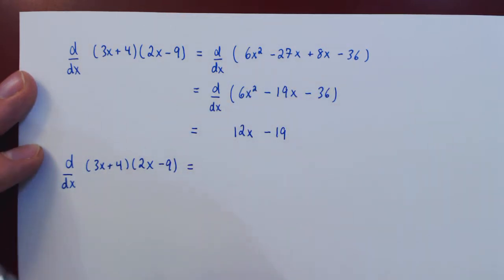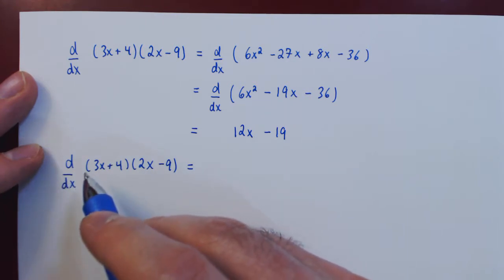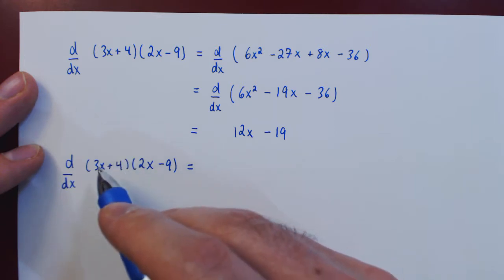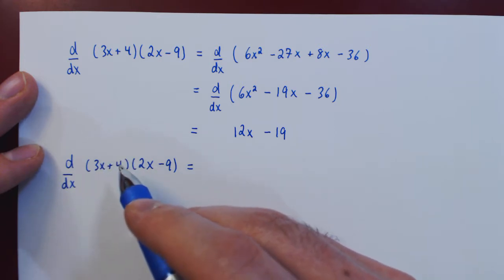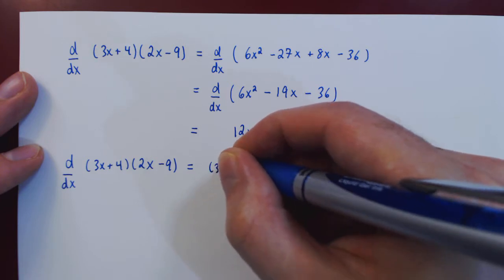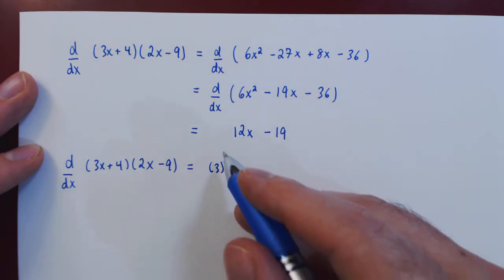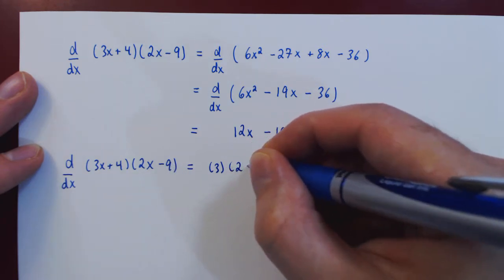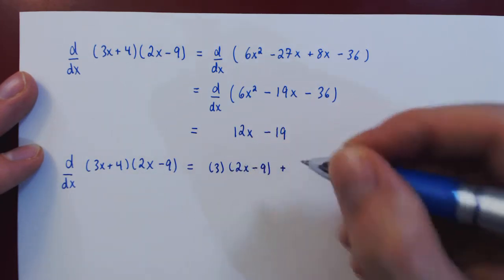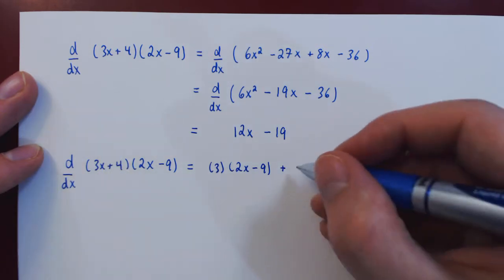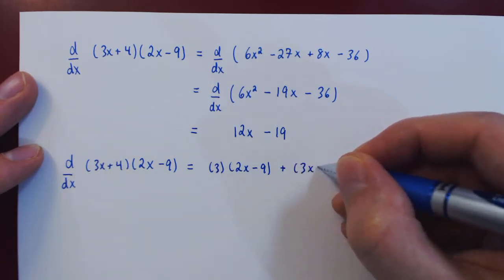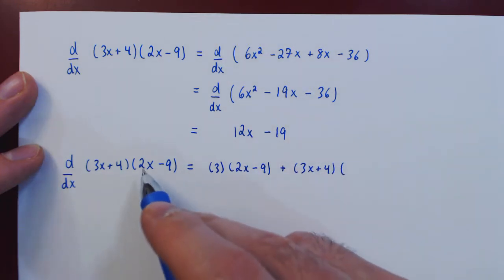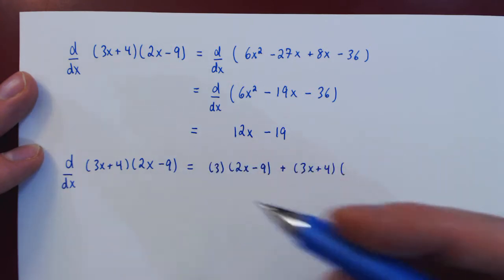So if you recall, the product rule states that the derivative of f of x times g of x is the derivative of the first function, which is 3 times 1 plus 0, so simply 3. So the derivative of the first function times the second function, 2x minus 9. But then plus the first function times the derivative of the second function, which is 2 times 1 minus 0, which is simply 2.